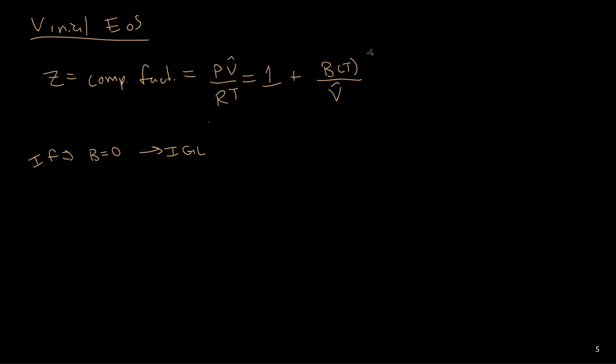All of the non-ideality that exists in the virial equation of state comes from this value for B. If we look at the details of how we write B, we can write B as a function of particular properties, mostly the critical point. We have R T_c over P_c.